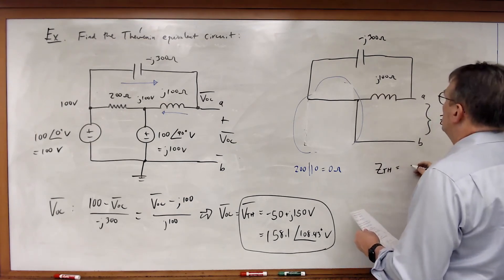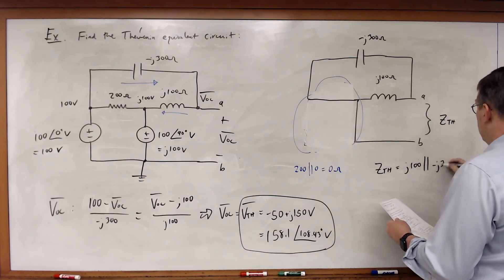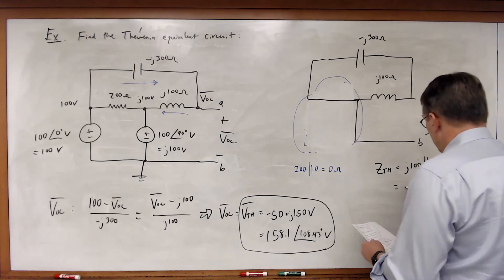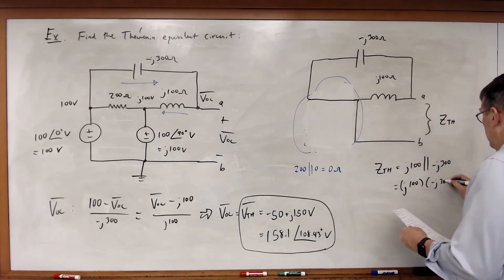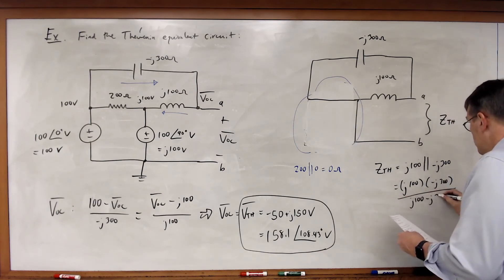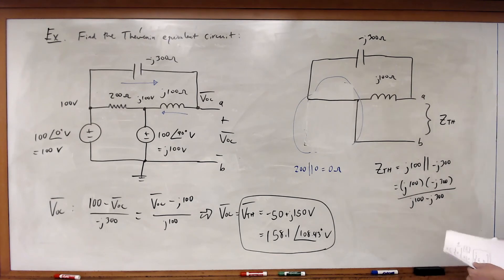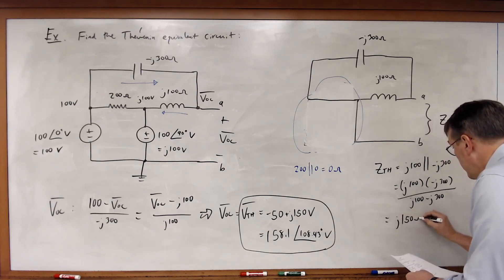These are both clearly in parallel, so ZTH will just equal j100 in parallel with -j300, which is j100 times -j300 divided by j100 minus j300. If you plug in the numbers, you get j150 ohms.